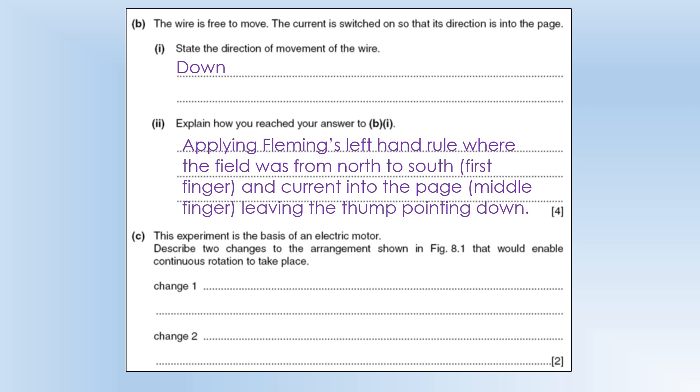The experiment is the basis of an electric motor. Describe two changes shown that would enable continuous rotation to take place. Well we're going to need to coil the wire up into a loop or a coil if you like. And we're also going to need to connect a split ring commutator. Because that's what allows it to keep rotating in the same direction.